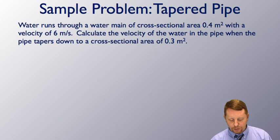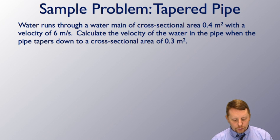Taking a look at a sample problem in a tapered pipe, water runs through a water main of cross-sectional area 0.4 square meters with a velocity of 6 meters per second. Calculate the velocity of the water in the pipe when the pipe tapers down to a cross-sectional area of 0.3 meters squared.